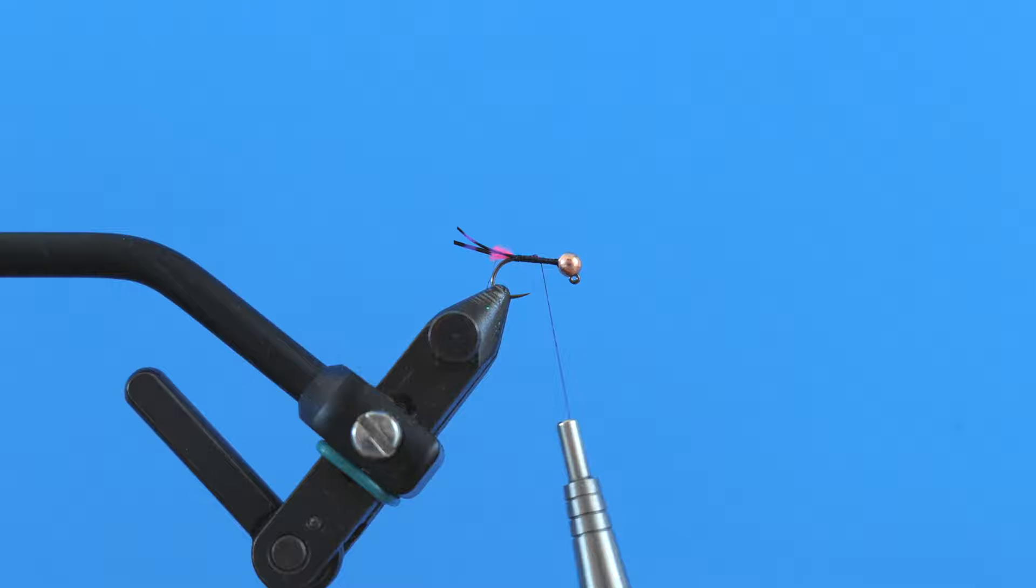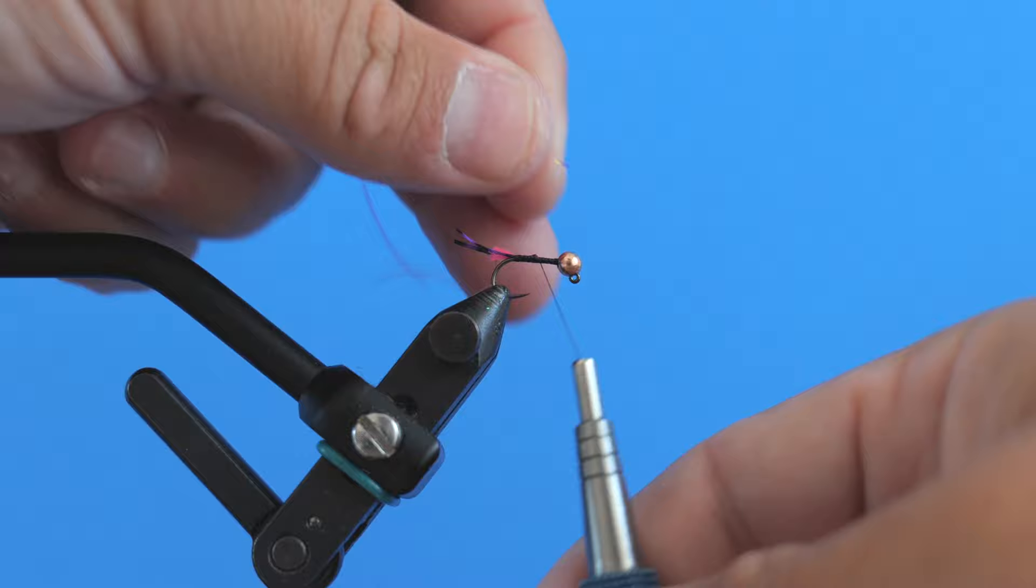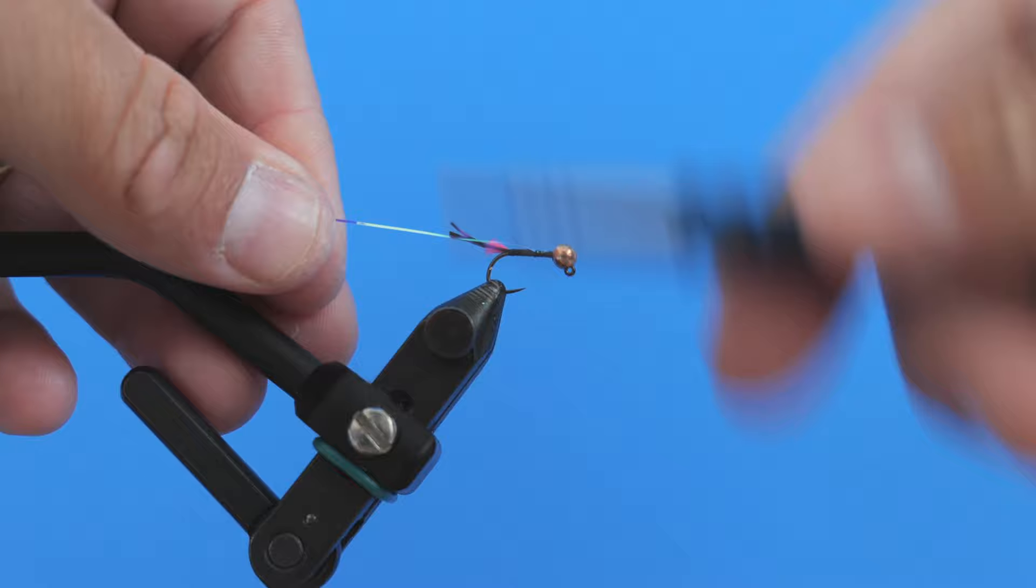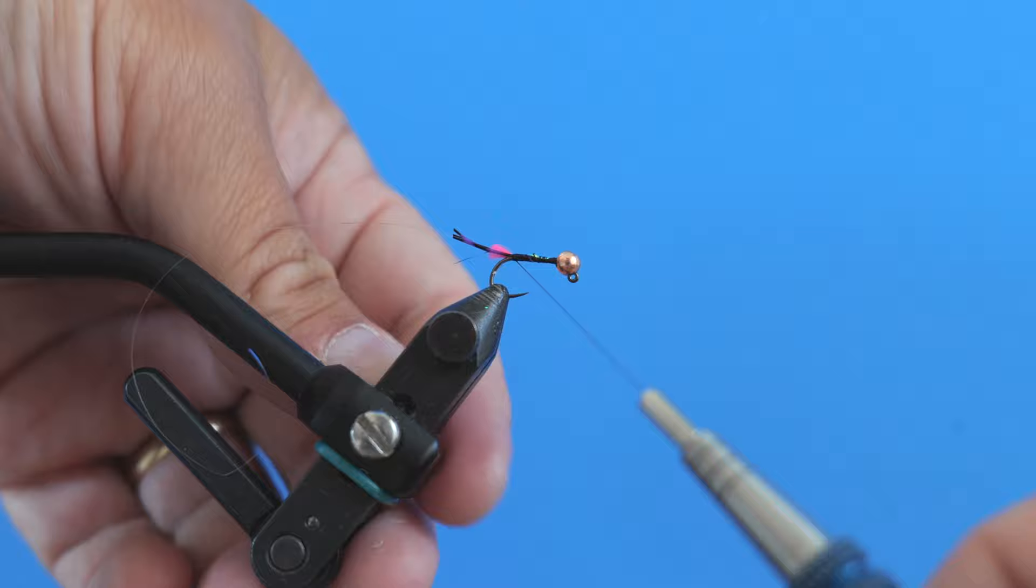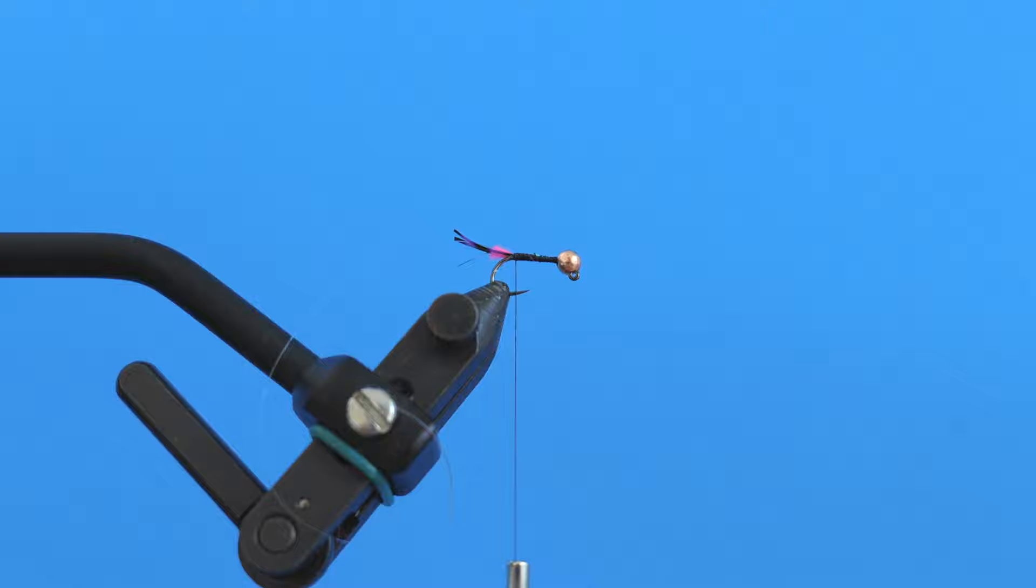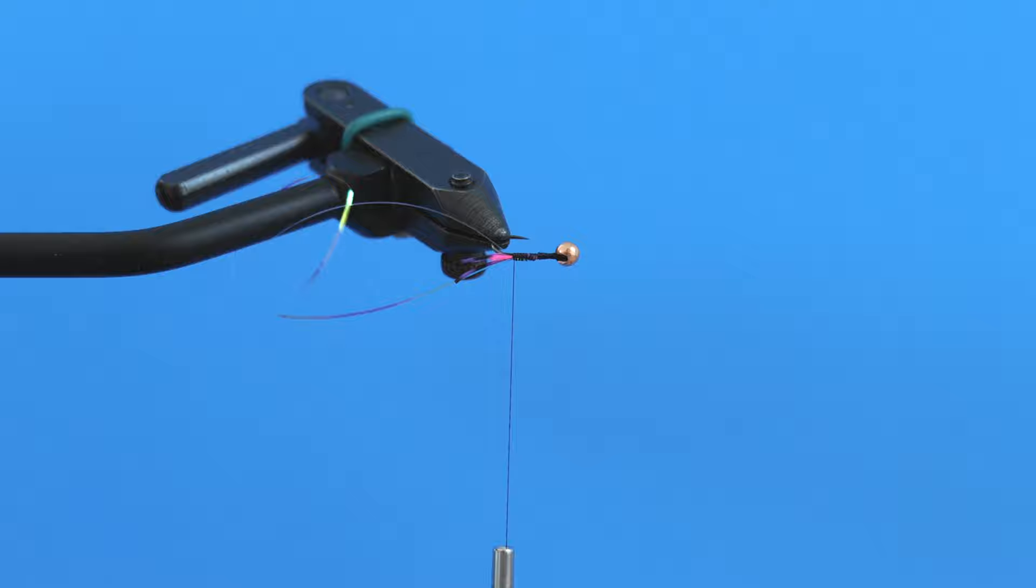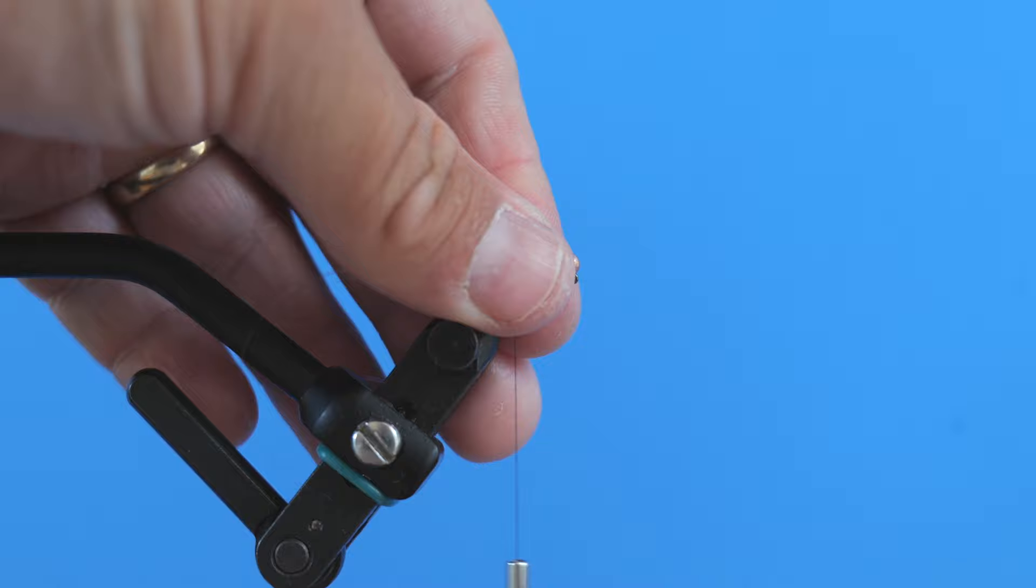And then I have a piece of opal tinsel that I'm going to also put in. So we put the tippet in to counter wrap the tinsel because the tinsel has a tendency to get torn up by fish's teeth. And so you need that tippet in there to counter it so that it has a little bit better durability. So I've tied in the tippet on one side of the hook, and then the opal tinsel's on the other side of the hook.